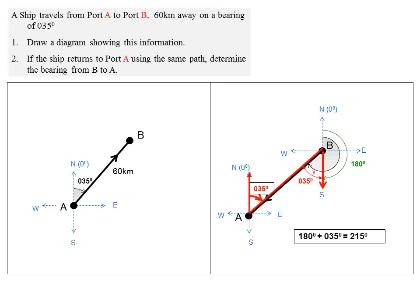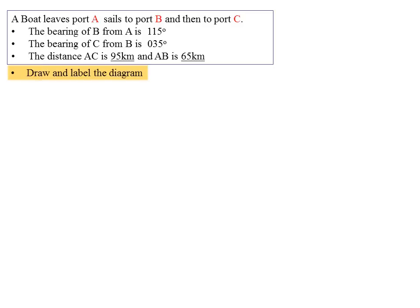Let us continue with a slightly more complex problem and one that you may typically see under examination conditions. Okay, let us now look at a problem that you'd more typically see on an exam. For example, here we have an example where we have a boat leaving port A traveling to port B and then on to port C. The bearing of B from A is given as 115 degrees, C from B is 35 degrees and of course the distances AC and AB are given. In the first instance, you are asked to draw and label the diagram showing that movement from A to B and then on to C.